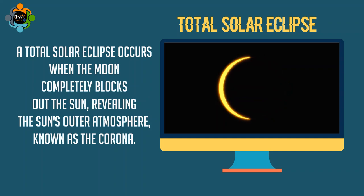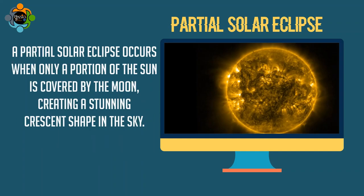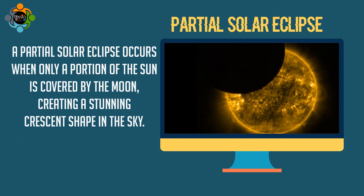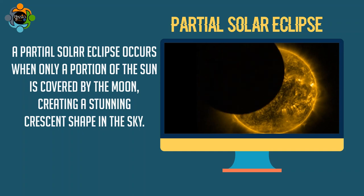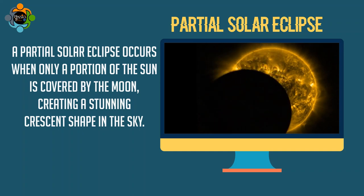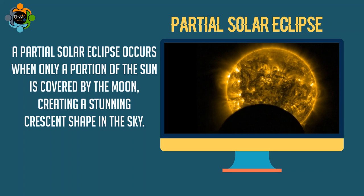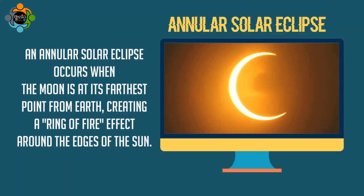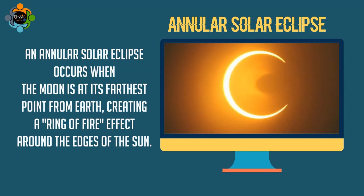A partial solar eclipse occurs when only a portion of the sun is covered by the moon, creating a stunning crescent shape in the sky. An annular solar eclipse occurs when the moon is at the farthest point from the earth, creating a ring of fire effect around the edges of the sun.